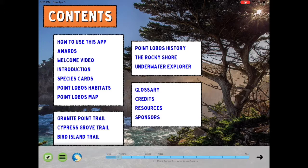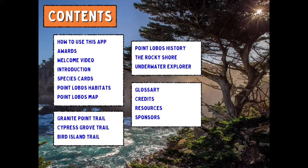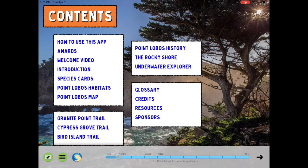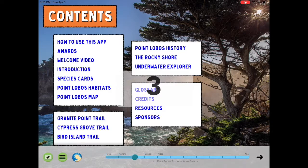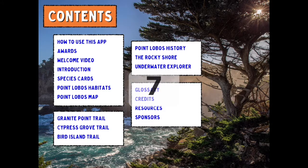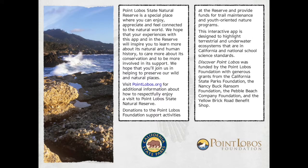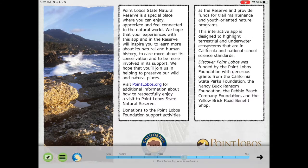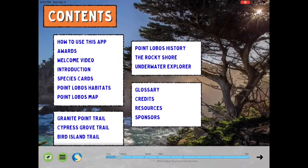The icon in the far left is the species cards. The three bars are this table of contents that we're looking at, and then there's a map. If you slide across the bottom, put your finger on the slide and move it across, you'll see you can go to a particular part of the tablet. Tapping anywhere on the screen brings you back to the table of contents.